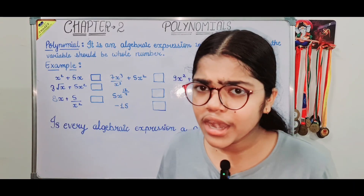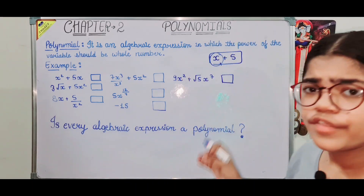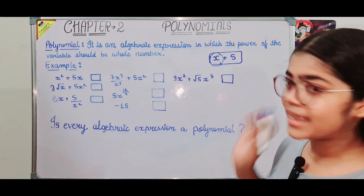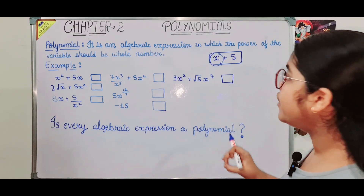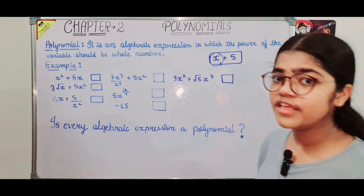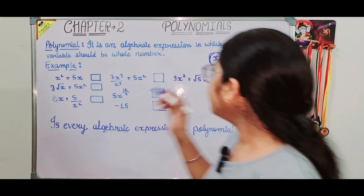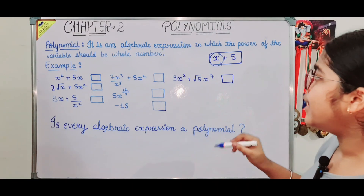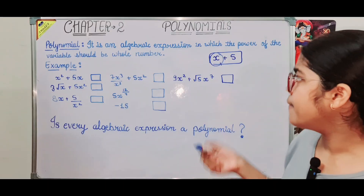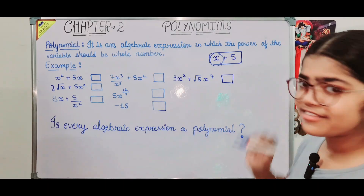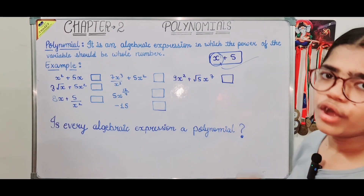Whole numbers are 0, 1, 2, 3, 4, and they go on. So what is a polynomial? A polynomial is an algebraic expression in which the variable has a whole number power. The variable is x, and the power must be a whole number.